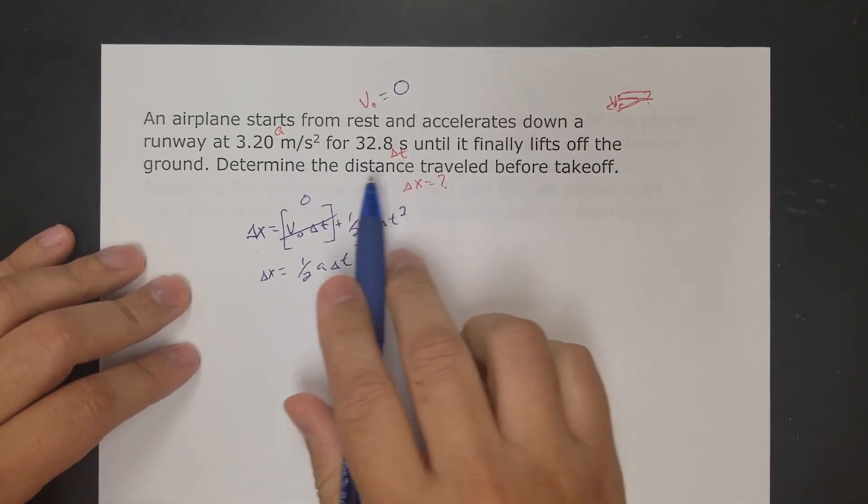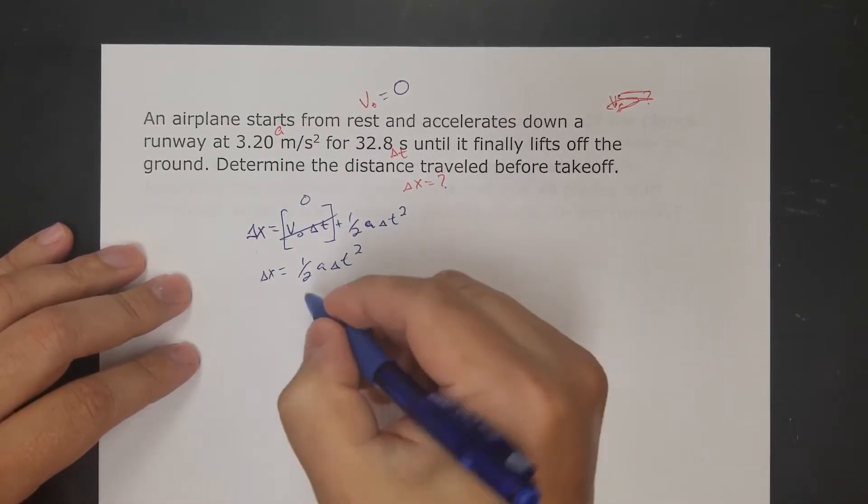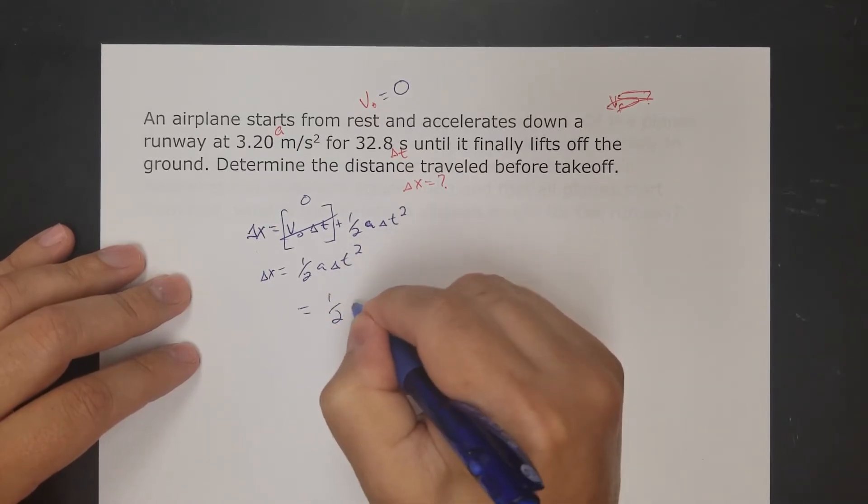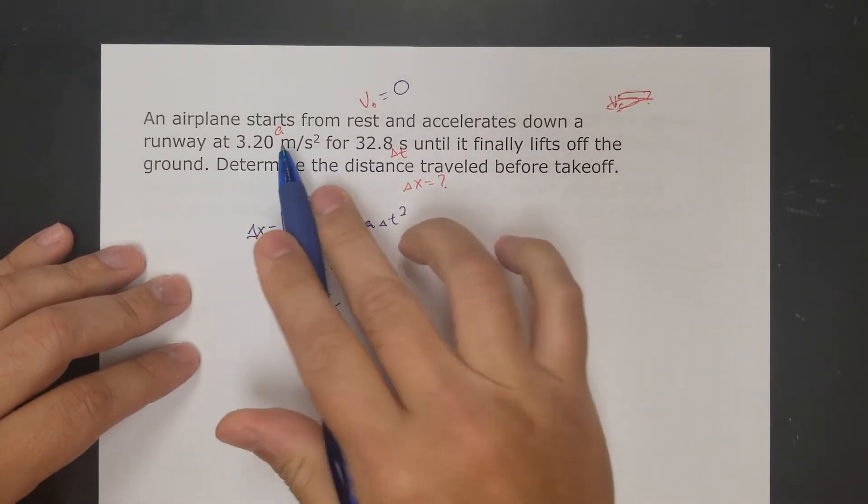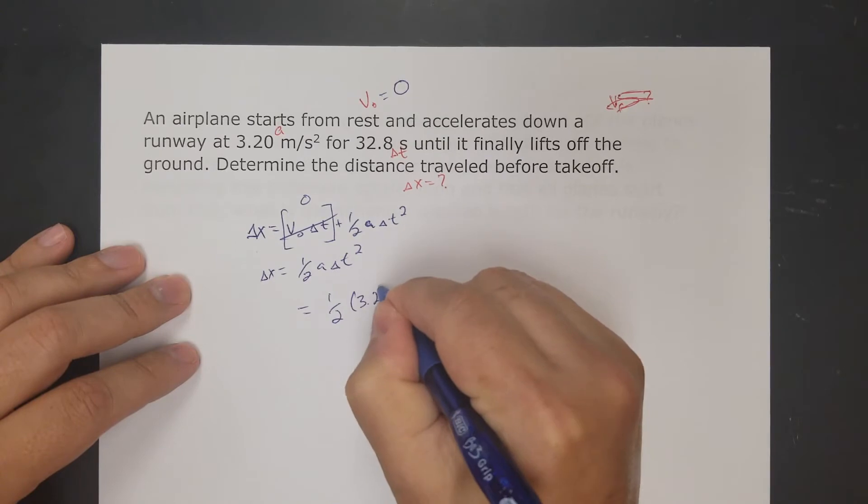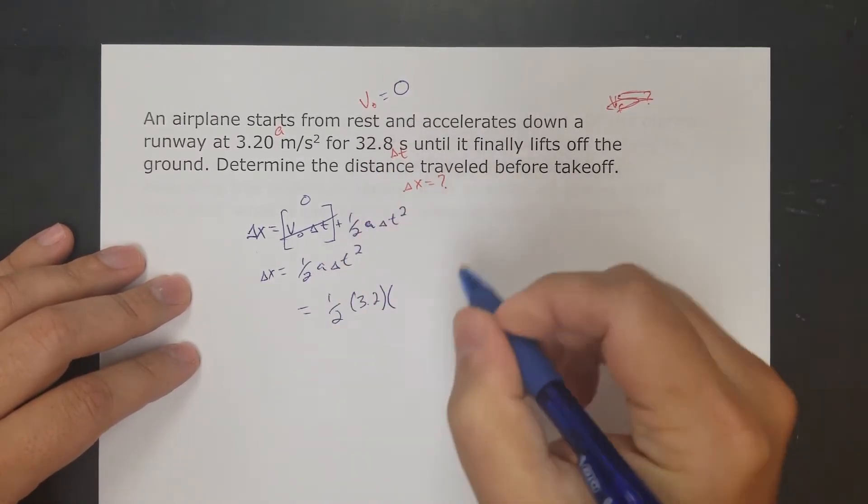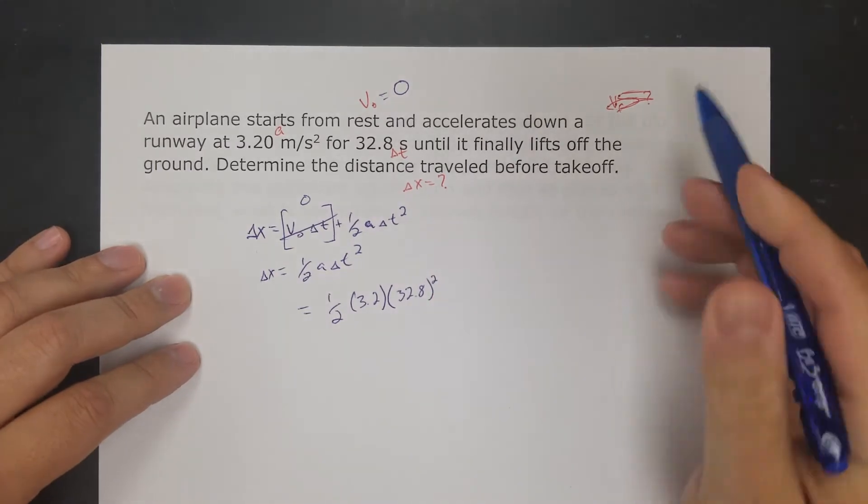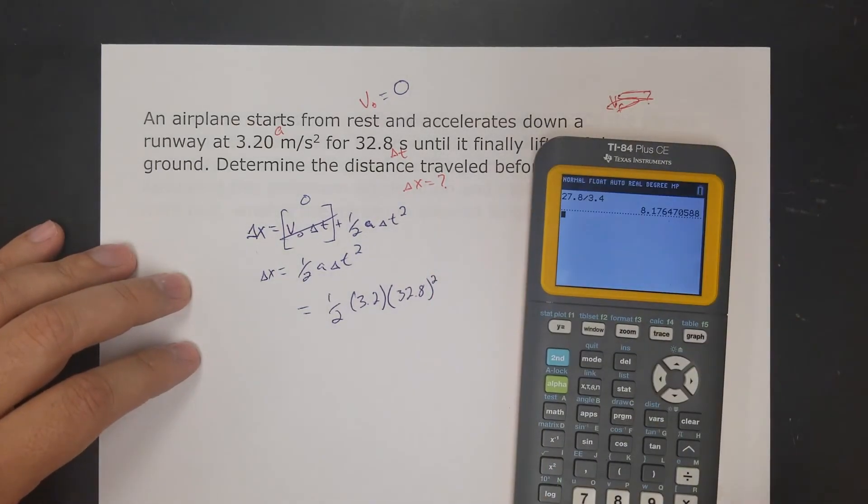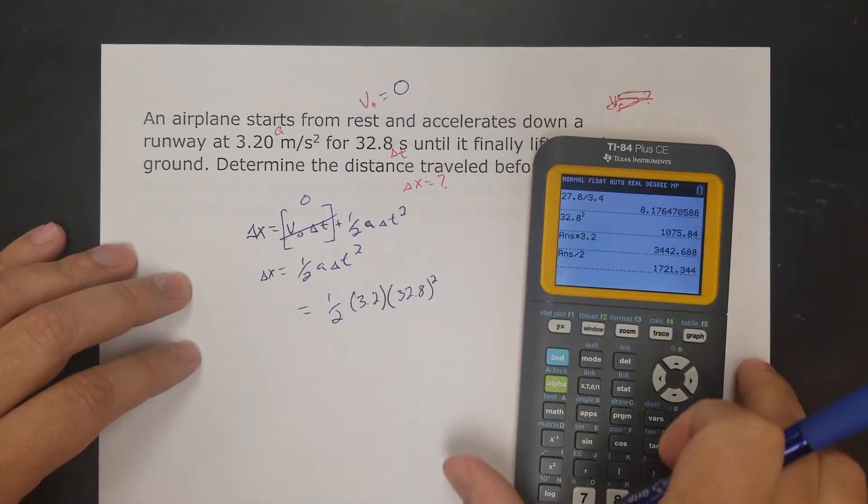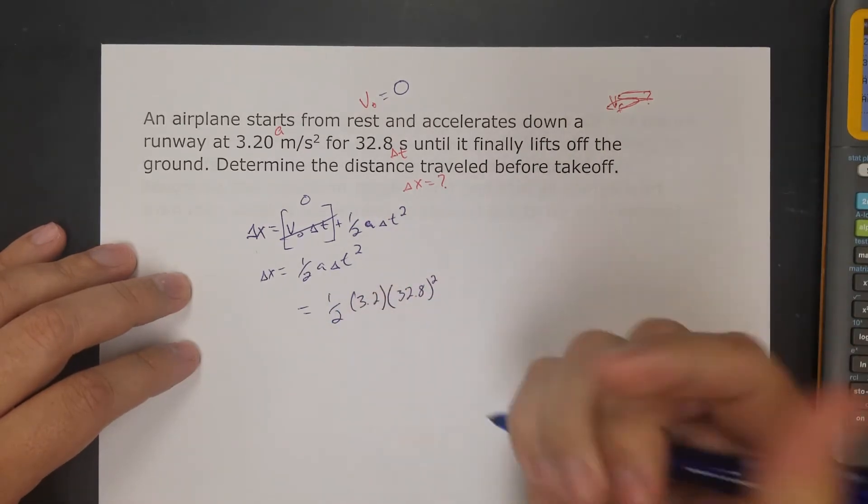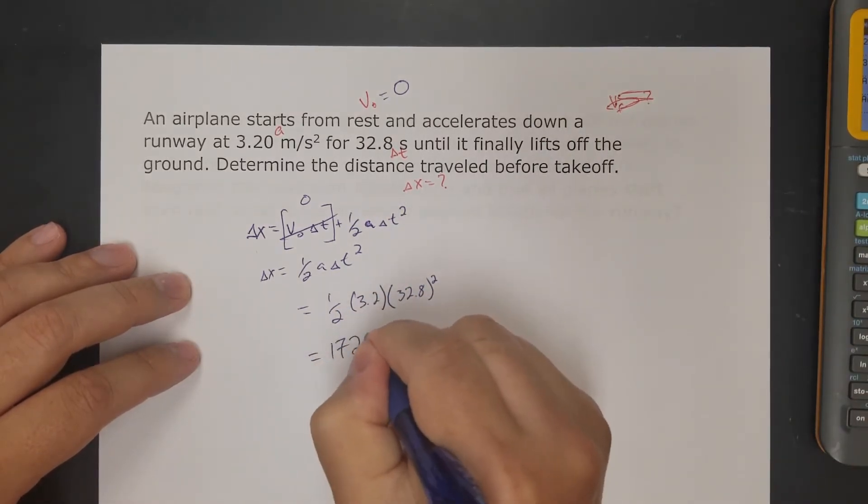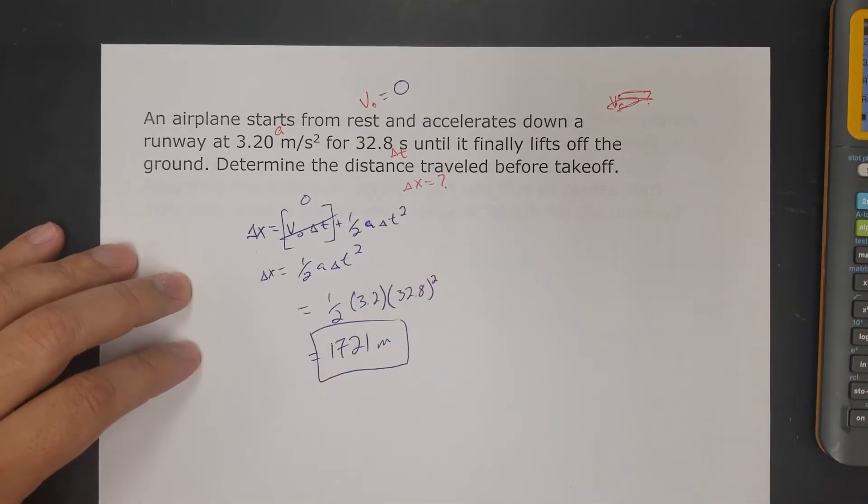This one's even easier because if I want distance, I don't have to do any algebra. I can just plug in and solve. One-half times the acceleration, 3.2, times the time squared, which is 32.8 squared. If I do that, I get 1,721 meters.